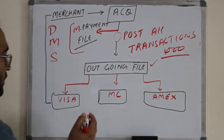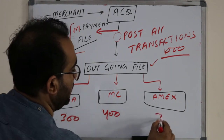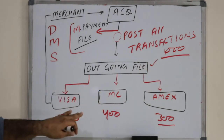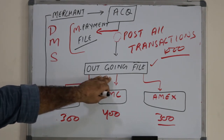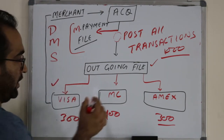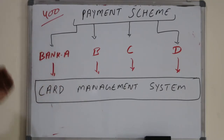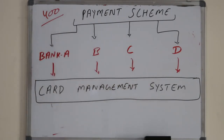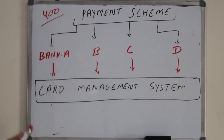Based on the BIN, the acquiring bank checks which transactions belong to which payment scheme. For example, 300 transactions belong to Visa, 400 to Mastercard, and 300 to Amex. They identify the BIN number and segregate accordingly, creating three different outgoing files — one for Visa, one for Mastercard, one for Amex. When the payment scheme receives the outgoing file from the acquiring bank, it performs its own internal processing before submitting files to the issuing banks.